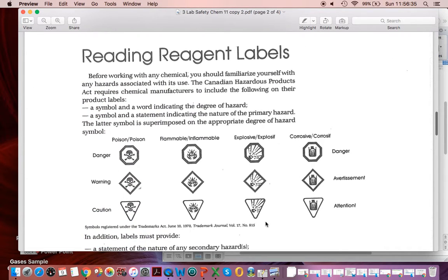You should know about these kind of labels. You should also know about WHMIS labels. And what you see is you have to know the degree of the hazard. Obviously danger is the worst, warning is next worst, and caution is next. You don't have to know the French.